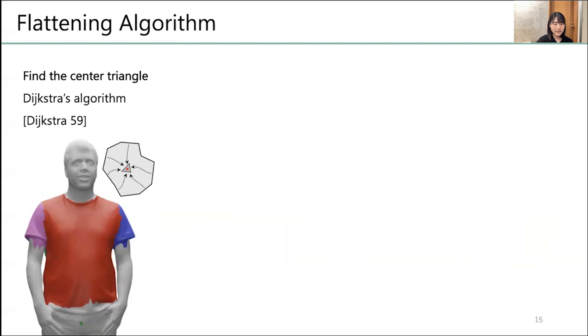The first step is to find the center triangle for each pattern part. To do this, we use the Dijkstra algorithm to find the shortest path from the edge. The triangle farthest from the edge of the pattern, found by this method, will be the center triangle.